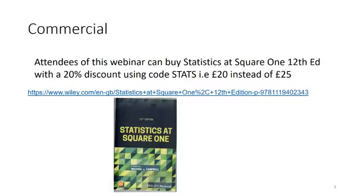Here's the commercial: you can buy Stats at Square One, 12th edition, with a 20% discount using the code 'stats' — so it's £20 instead of £25. Jane or Bethany will put this in the chat function so you get the code. I've also put the whole book into R Markdown, so all the code is available — the link to the R Markdown code will also appear in the chat.